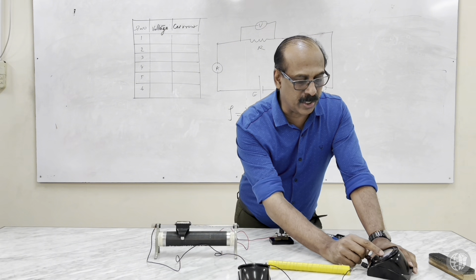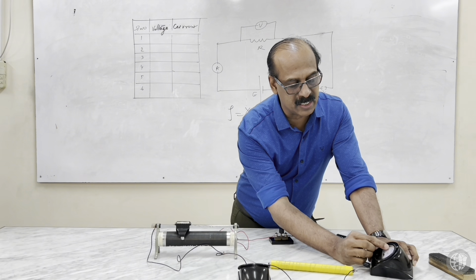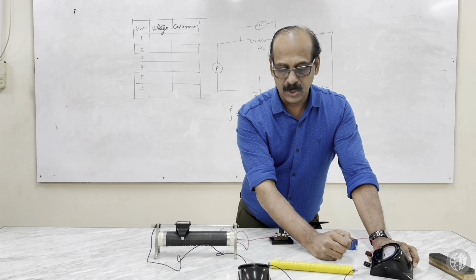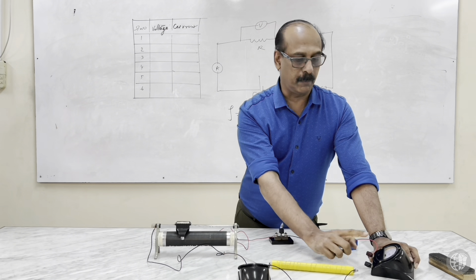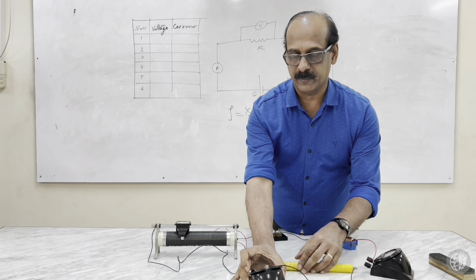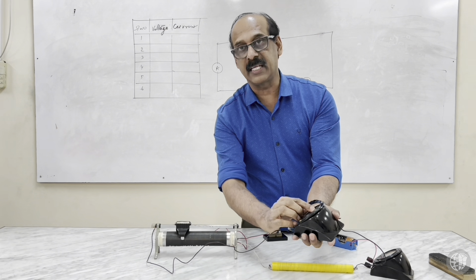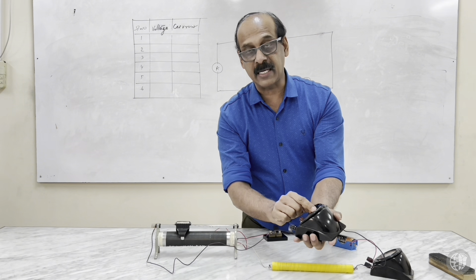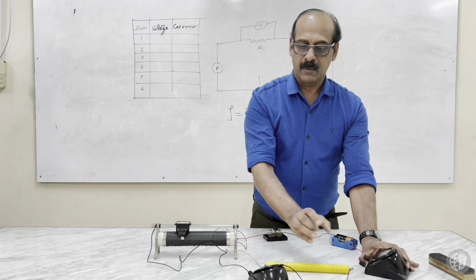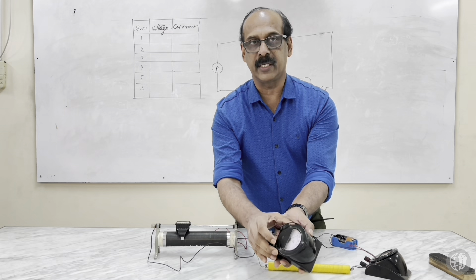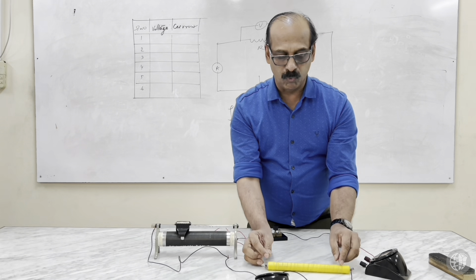One division of this milliammeter is 2 milliamperes — zero to 20 means 10 divisions indicate 20 milliamperes, so one division equals 2 milliamperes. That is the least count of this milliammeter. Now for the voltmeter: zero to 100 with 10 divisions, so one division equals 10 millivolts. This is used to measure voltage across the load.